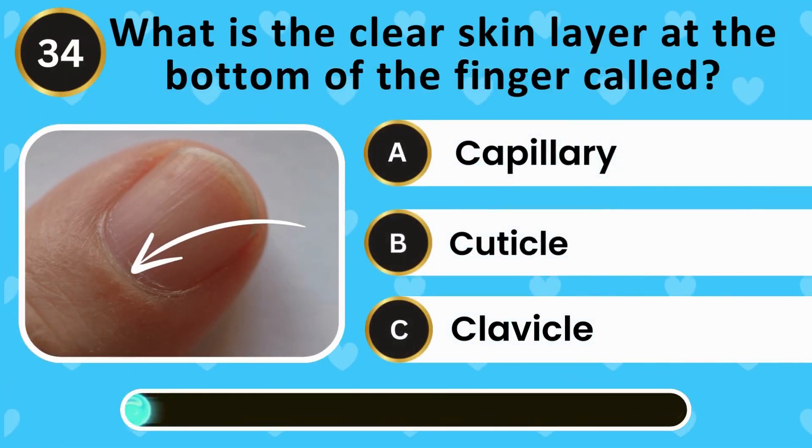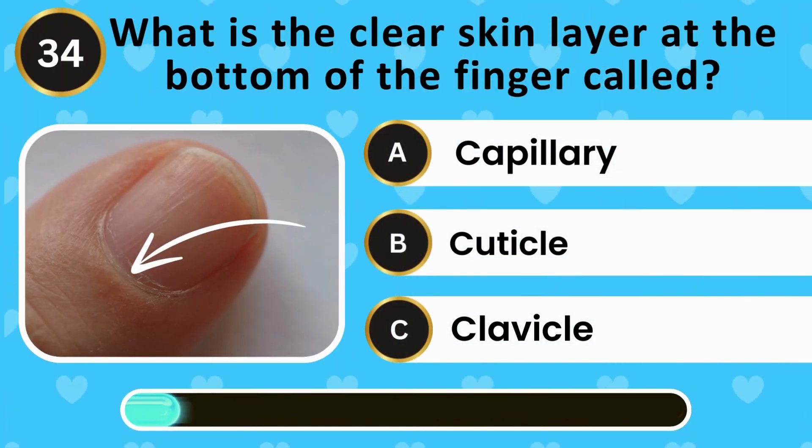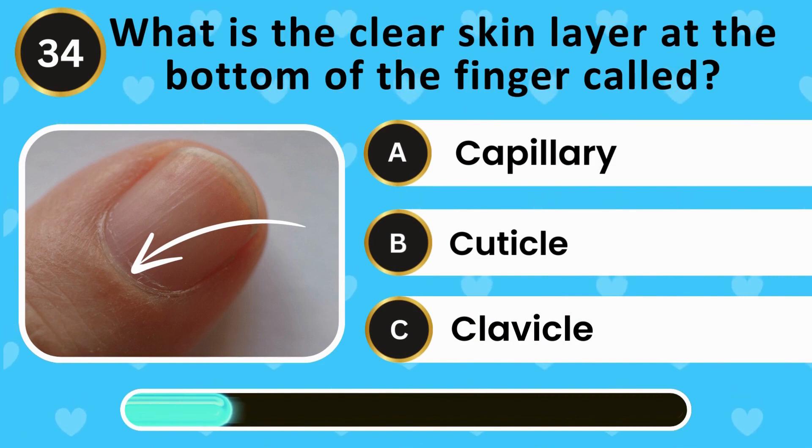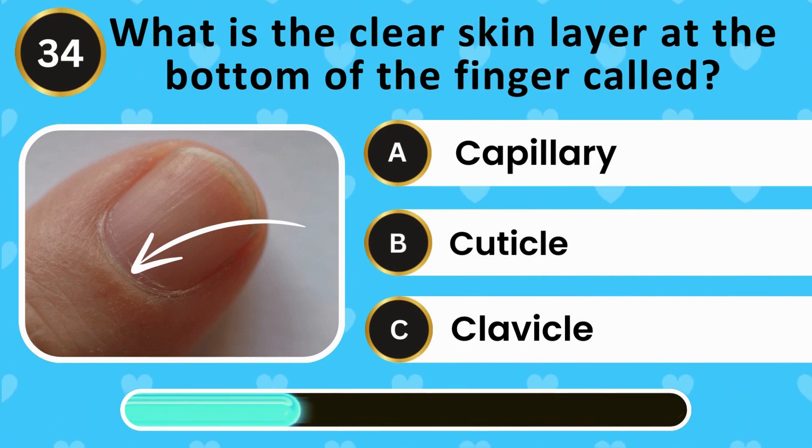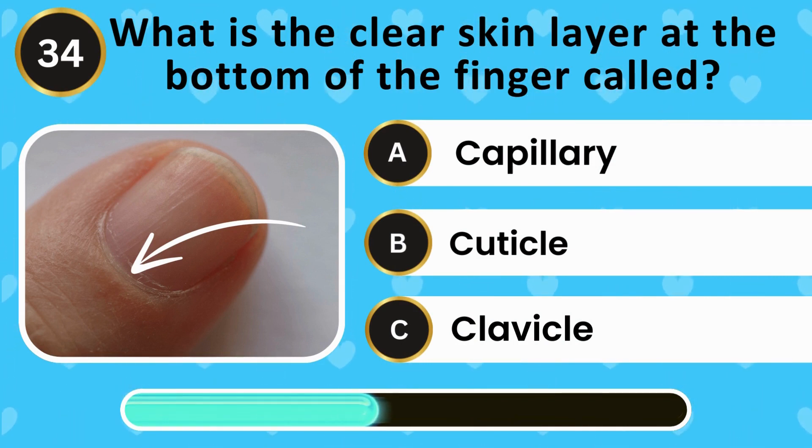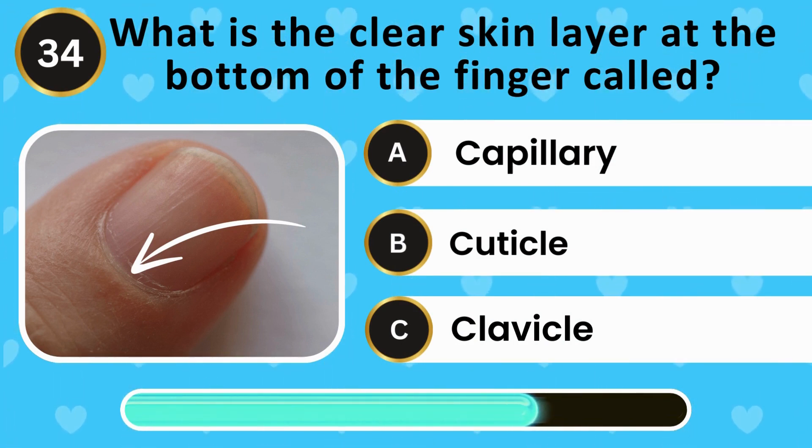What is the clear skin layer at the bottom of the finger called? Capillary, cuticle, clavicle.